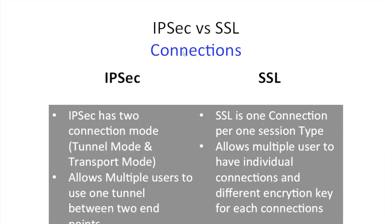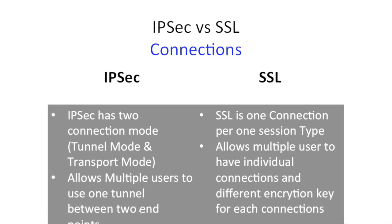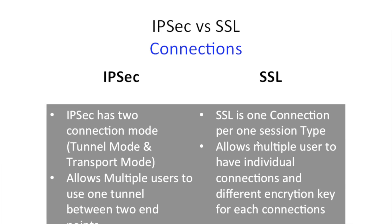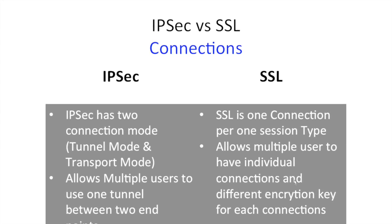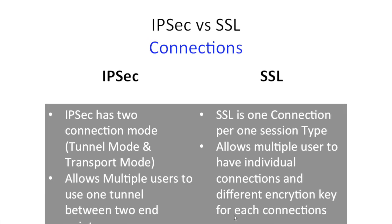For connections, IPSec has two connection modes: tunnel mode and transport mode. It allows multiple users to share one tunnel between two endpoints. SSL creates one connection per session, allowing multiple users to each have their own individual connection with a different encryption key per connection.